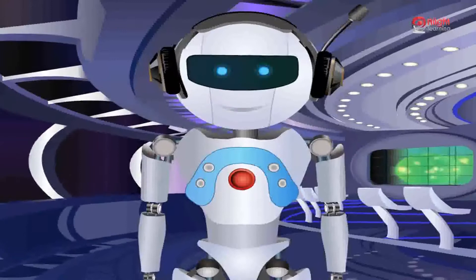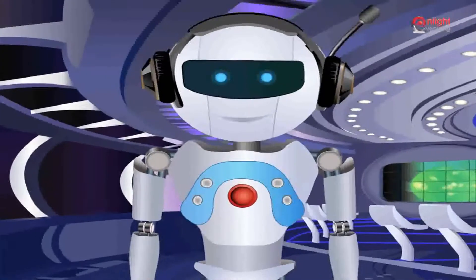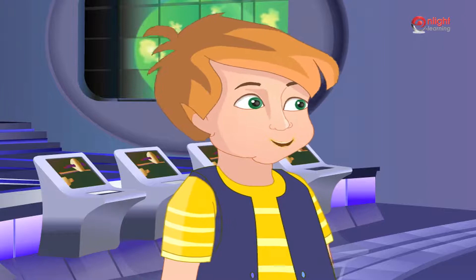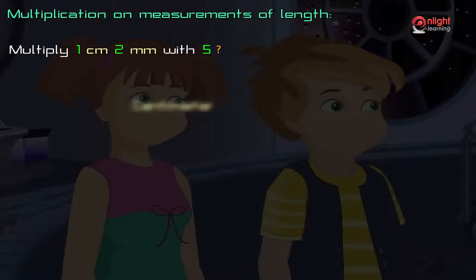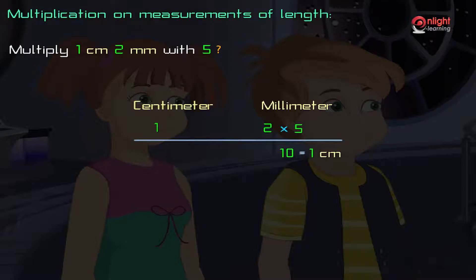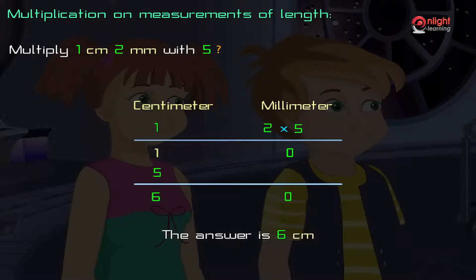Why don't you solve some problems to understand this concept better? Multiply 1 centimeter 2 millimeters by 5. Let us solve this by the method of arranging quantities in columns. Since centimeter is larger in magnitude than millimeter, it comes to the left. Under the millimeter column, we write 2. Multiplying from the right, first we multiply 2 × 5 = 10 millimeters. 10 millimeters equals 1 centimeter. By carrying 1 to the left and keeping 0 in the millimeter section, we multiply 1 × 5 = 5, and adding 1, we get 5 + 1 = 6. Hence, the answer is 6 centimeters.